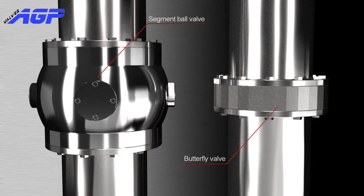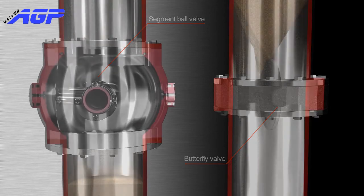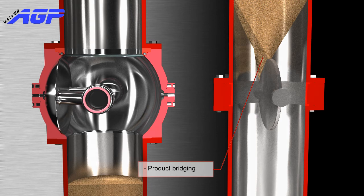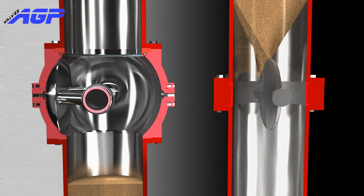This is an example of product bridging during discharge, which is a well-known problem with butterfly valves. Whereas the segment of the segment ball valve swings completely out of the product flow, enabling product to flow freely.